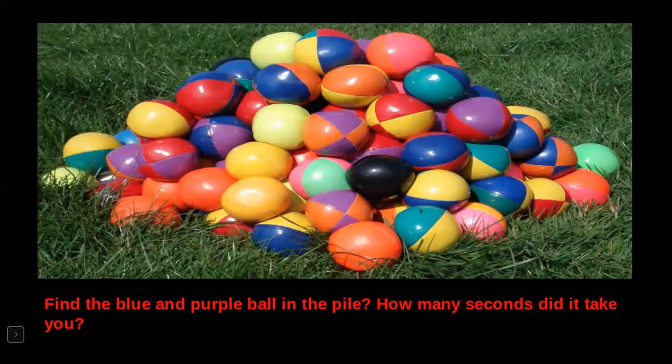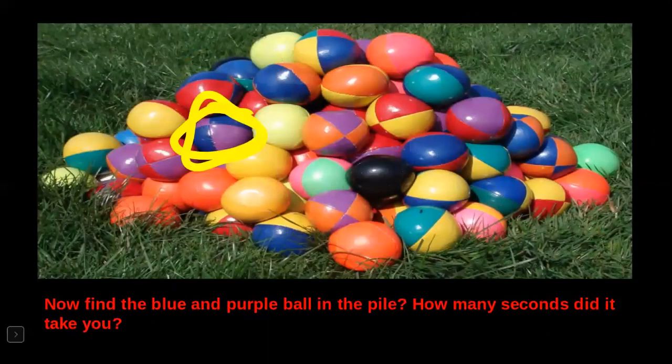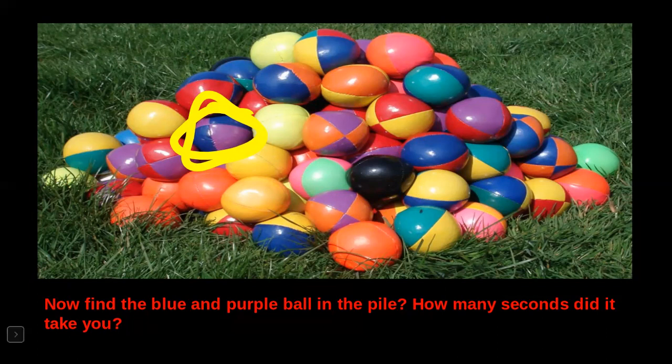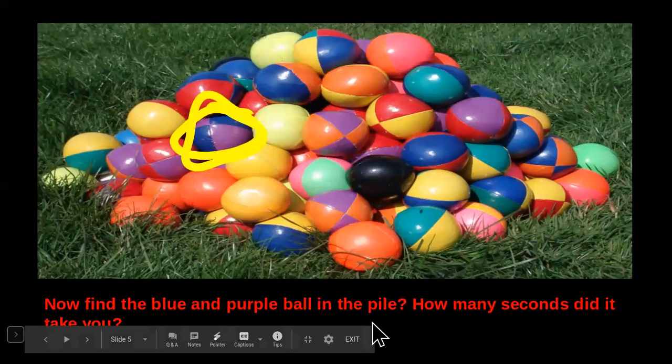So here you see a big pile of balls with different colors. Find the blue and purple ball in the pile. How many seconds did it take you? Now how many seconds did it take you? It was probably a lot faster because there is a bright vibrant yellow color around the blue and purple ball that's in the pile. Les tomó menos tiempo porque hay un color vibrante de amarillo alrededor de la pelota morada y azul.